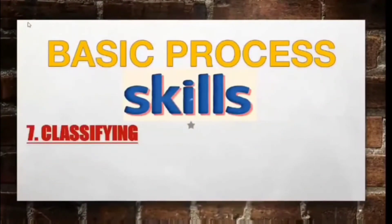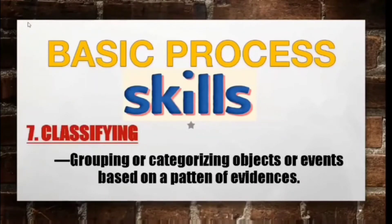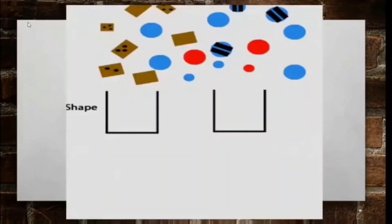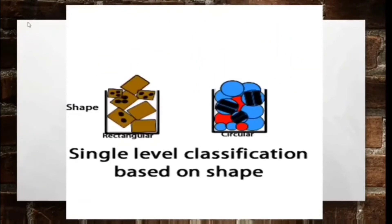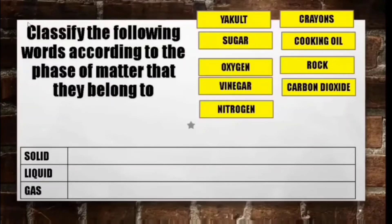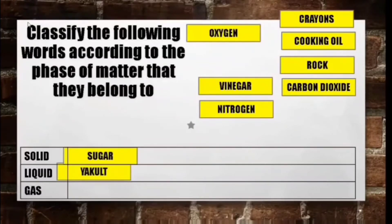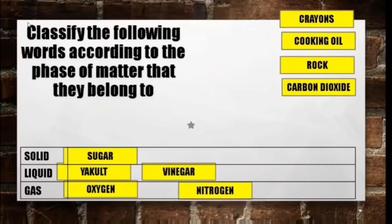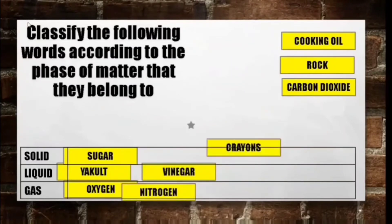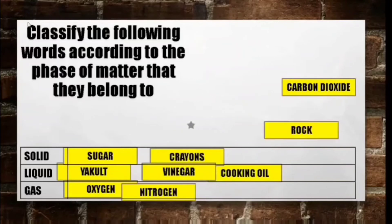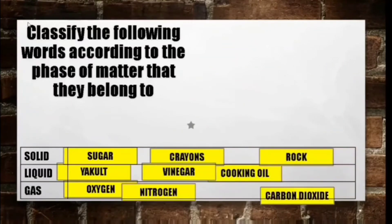Skill number seven: classifying. Classifying is the skill of grouping or categorizing objects or events based on a pattern of evidence. For instance, if there are different shapes and colors and we are asked to group them by shape, there will be two groups: one for rectangular shapes and one for circular shapes. Let's classify the following objects according to the states of matter: Yakult is liquid, sugar is solid, oxygen is gas, vinegar is liquid, nitrogen is gas, crayons are solid, cooking oil is liquid, rock is solid, and carbon dioxide is a gas.